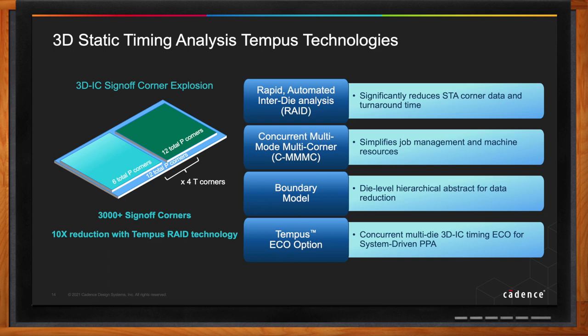In a 3D IC configuration, based on the thermal feedback, the number of temperature corners can be large. Sometimes you may end up having more than 2,000 or 3,000 sign-off corners, and it's just impractical to handle those many with the standard technology that we have. It's really a problem for which we had to come up with new technology.